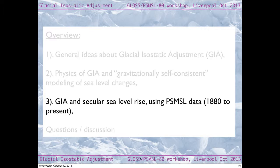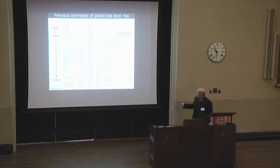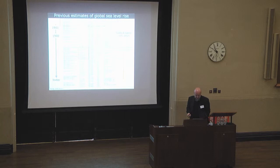Now I go to the point about GIA and secular sea level rise using PSMSL data. This is a table taken from a paper we have written recently with Gaia Galassi. This table collects all the previous estimates of the secular sea level rise published since the first work of Woodworth in 1941. We have the authors of the paper, the values of the secular sea level rise, the period during which tide gauge records were considered, information about the methods used to make this assessment, and in the last column, information about the GIA correction. As you can see from this table, GIA correction started only in 1989 with Peltier and Tushingham. Before this, no GIA correction was applied at all. Starting from this period, a lot of corrections have been proposed in the literature which have had a significant impact on our knowledge about secular sea level variations.